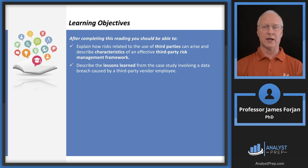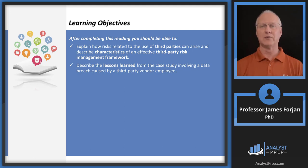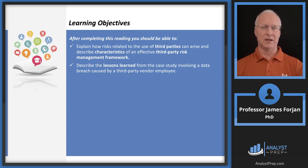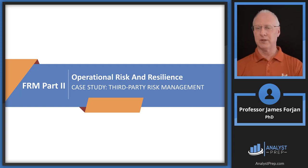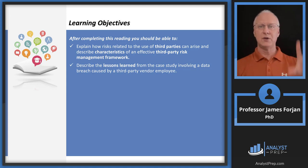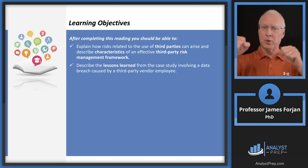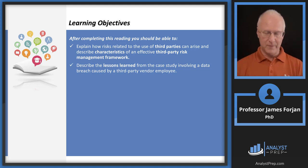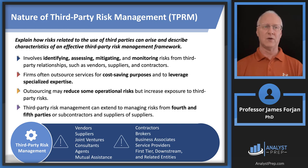The first learning objective is super similar to what we've seen before: we're going to talk about third-party risk, and we'll discuss elements, characteristics, and the risk management framework. Make sure you understand that GARP has these learning objectives across the operational risk and resilience chapters that sound an awful lot alike, meaning there will probably be similar questions from each of these chapters.